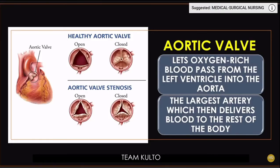And lastly, we have the aortic valve. The aortic valve lets oxygen-rich blood pass from the left ventricle into the aorta. The aorta is known as the largest artery, which then delivers blood to the rest of the body.